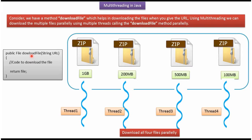Here you can see a download file method. If you pass the URL, this method will download the file. Here you can see multiple files with different sizes. Suppose we want to download all these files in parallel — then we can use multithreading. Using multithreading, we can create multiple threads, and each thread should call this download file method in parallel.